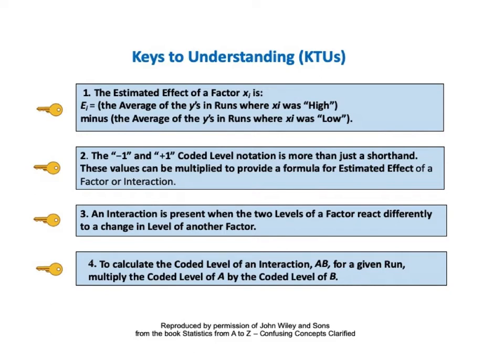Since this Part 3 video builds on the Part 2 video, let's review the keys to understanding from Part 2. The first key said: the estimated effect of a factor X sub i equals the average of the y's in runs where X sub i was high, minus the average of the y's in runs where X sub i was low. KTU number 2 said: the negative 1 and plus 1 coded level notation can be multiplied to provide a formula for the estimated effect of a factor or interaction. KTU number 3 said: an interaction is present when the two levels of a factor react differently to a change in the level of another factor. And KTU number 4 said: to calculate the coded level of an interaction AB for a given run, multiply the coded level of A by the coded level of B.